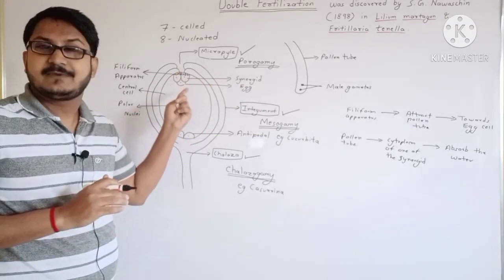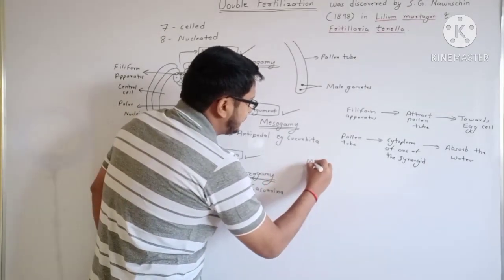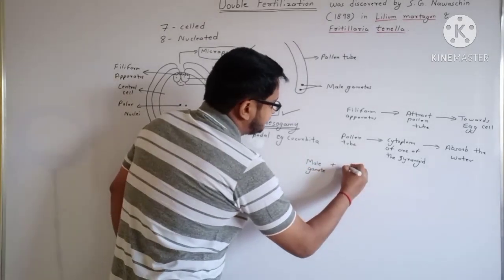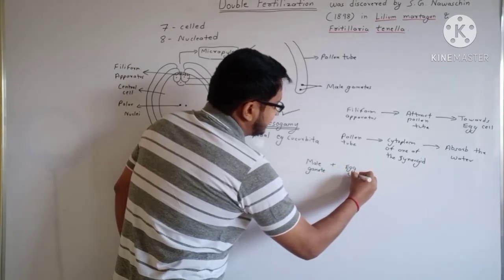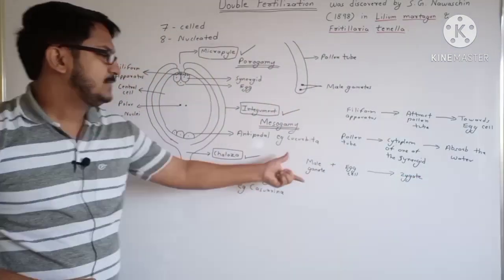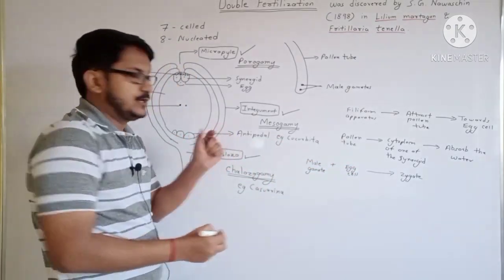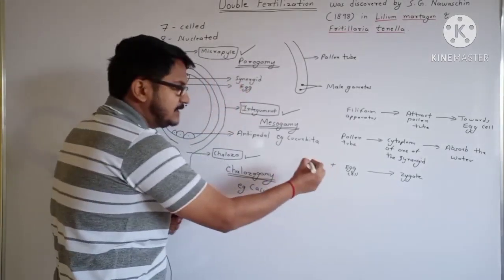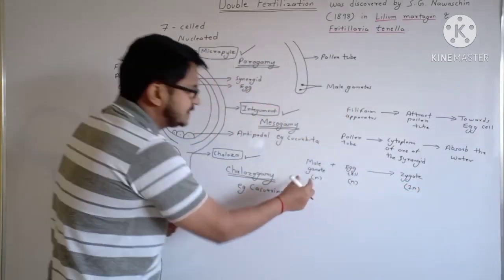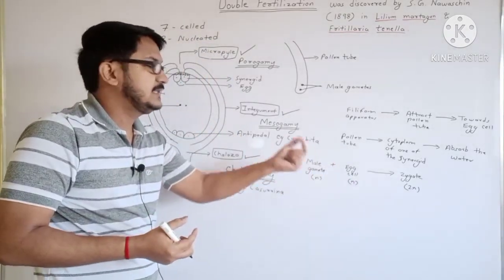Now I have the two male gametes. One male gamete fuses with the egg cell — also known as the oosphere — and gives me the zygote. The male gamete is haploid and the egg cell is also haploid, so they combine to give me the diploid zygote.